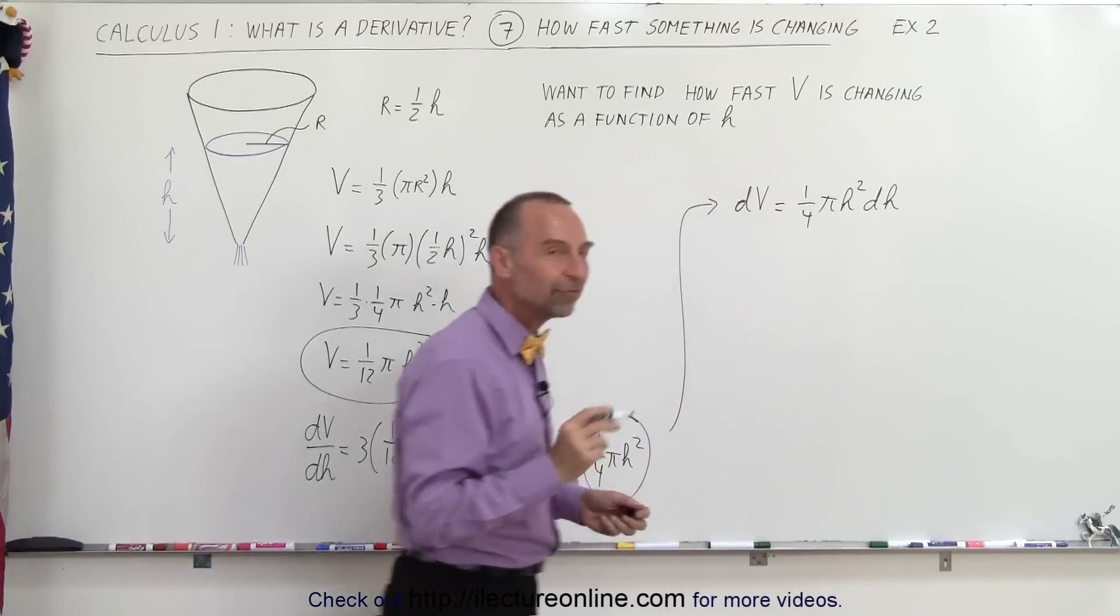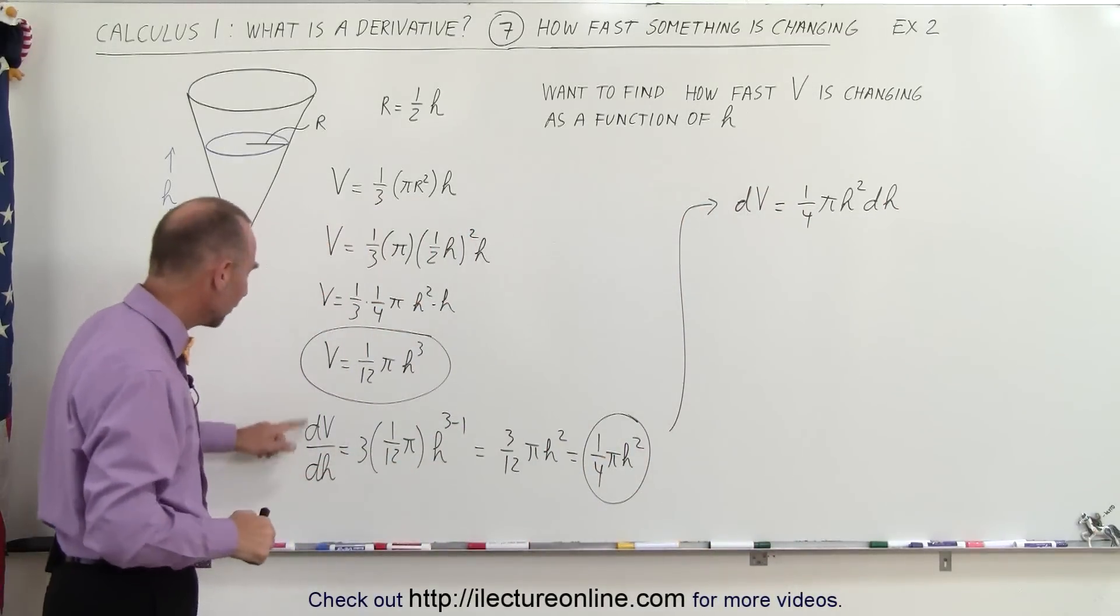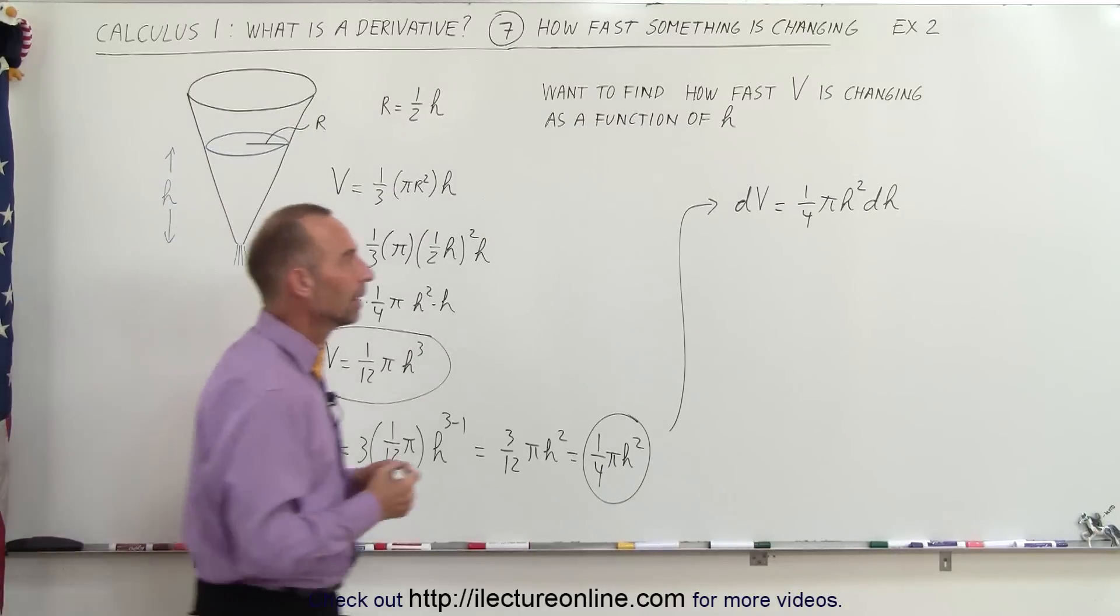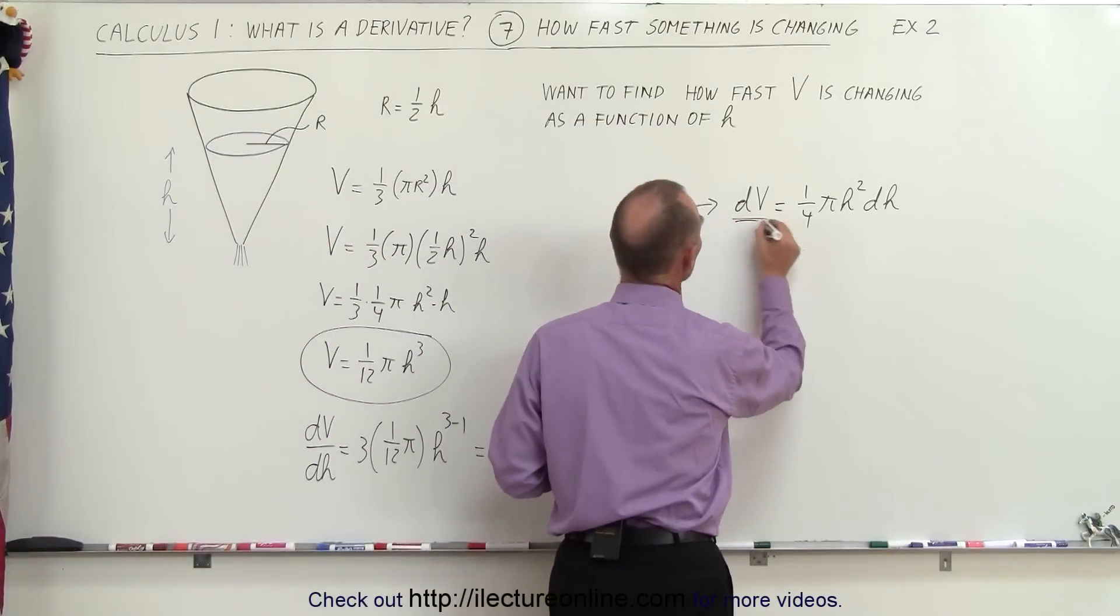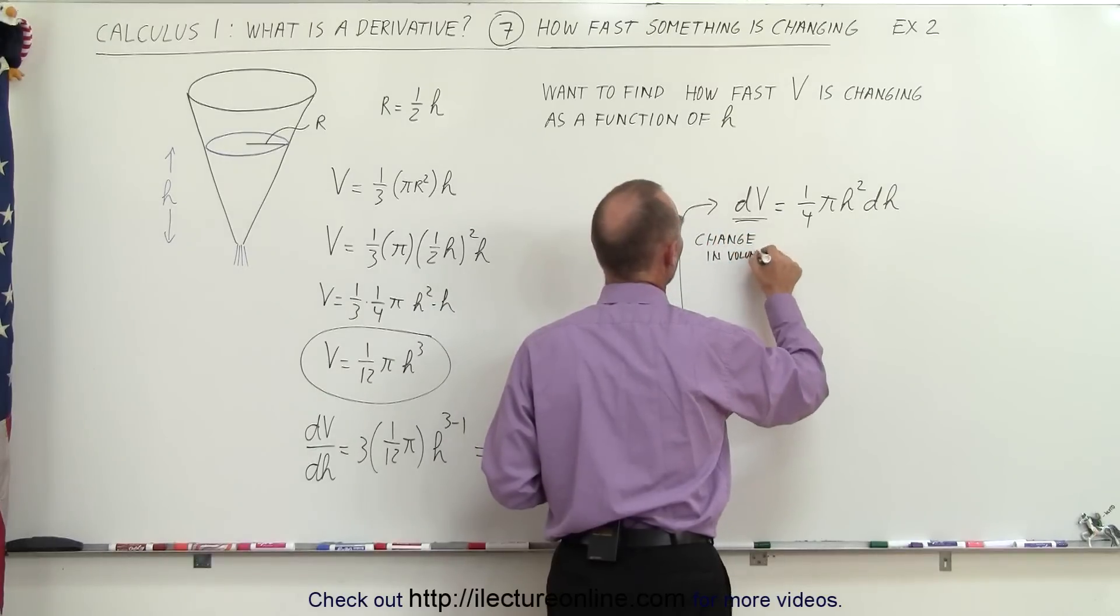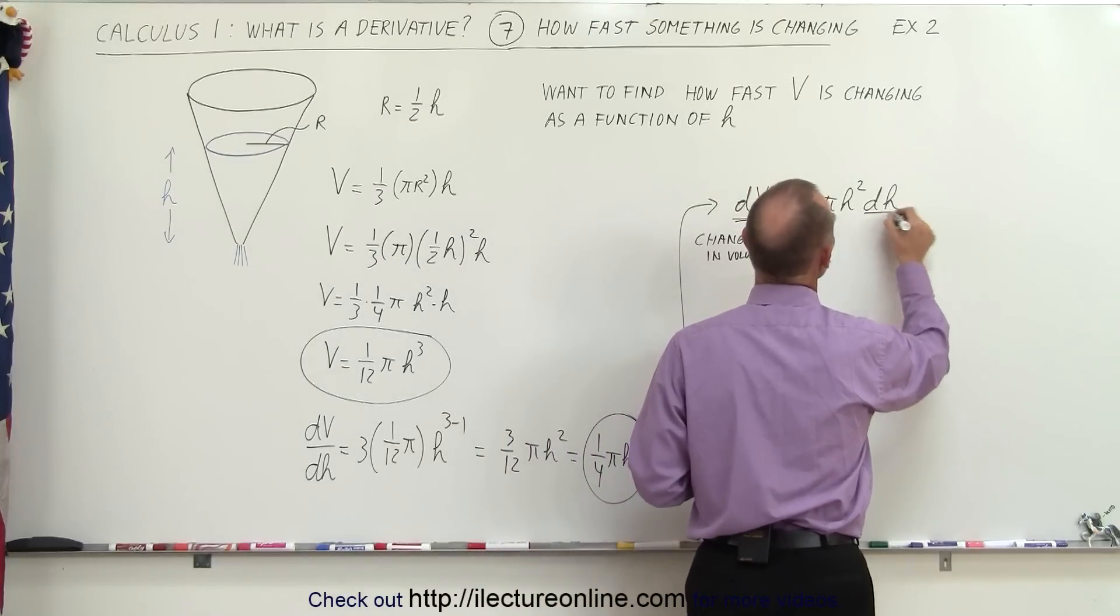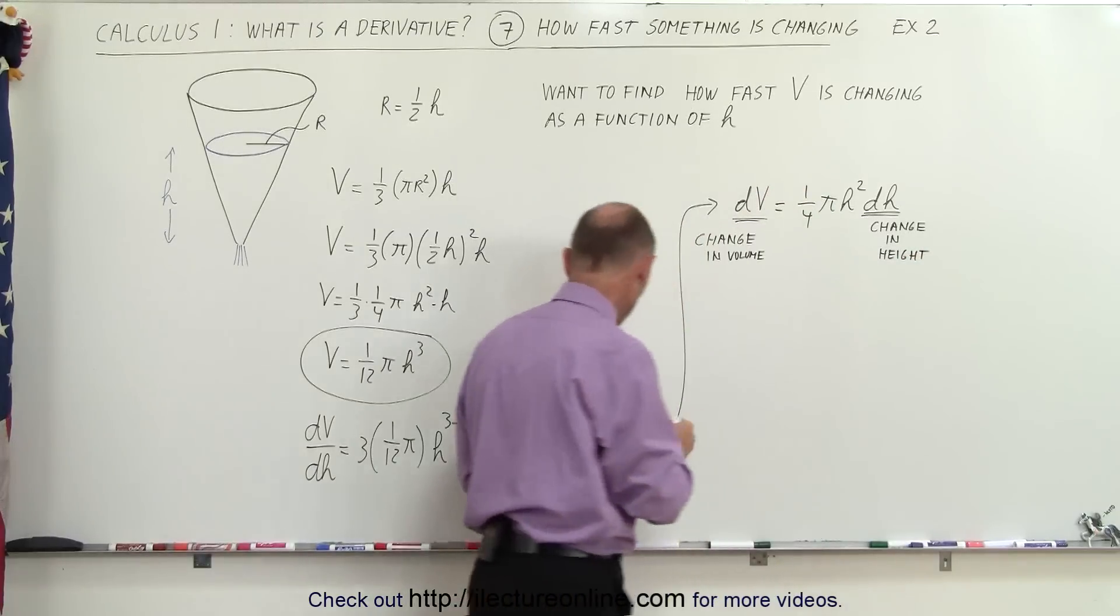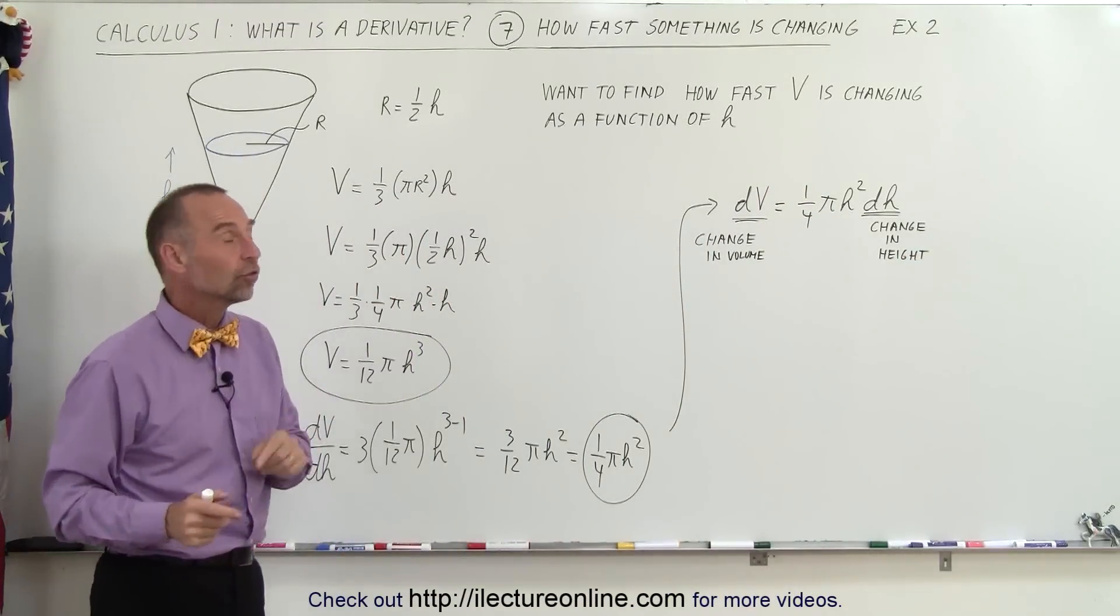Notice, what I've done now is I've taken the denominator of that derivative notation and moved to the right side of the equation. This here means the change in volume. This here means the change in height. Of course, in this case, it would be a change in the height of the water column.